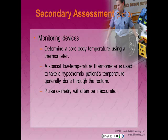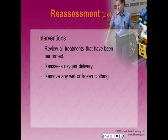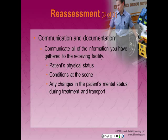Utilize monitoring devices. Determine the core body temperature using a special low-temperature thermometer, generally done through the rectum per local protocols. Remember that pulse oximetry will often be inaccurate due to lack of perfusion in the extremities. Reassess: repeat your primary assessment and reassess vital signs and the chief complaint. Monitor level of consciousness and remember that rewarming may lead to cardiac arrhythmias. Remove any wet or frozen clothing, but do not remove clothing that is frozen to the patient's skin. Communicate all information gathered to the receiving facility, including the patient's physical status and any changes in mental status during treatment and transport.